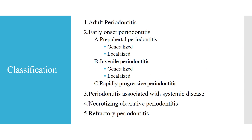Coming to the classification of periodontitis: one is adult periodontitis, then early onset periodontitis. Under early onset periodontitis, there are prepubertal periodontitis and juvenile periodontitis. Under prepubertal periodontitis, it is generalized and localized; in juvenile also, it is generalized and localized. Another type is rapidly progressive periodontitis. The third is periodontitis associated with systemic diseases, then necrotizing ulcerative periodontitis, then refractory periodontitis.